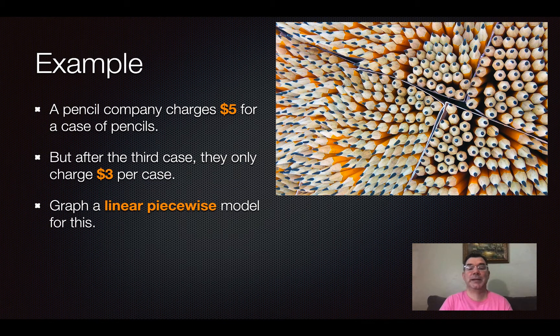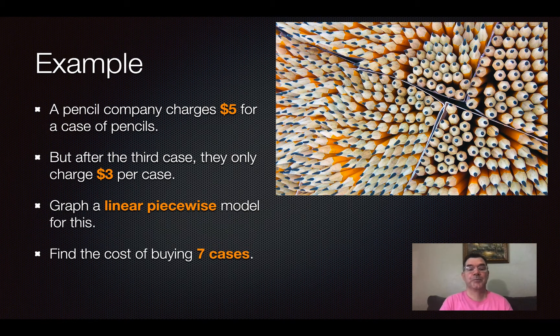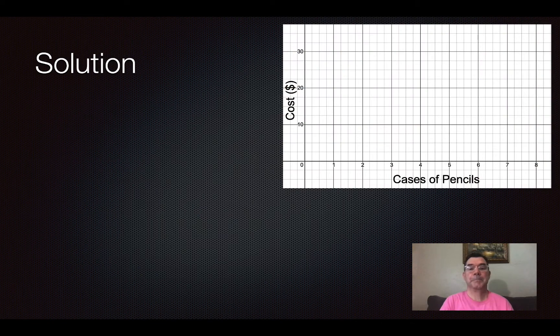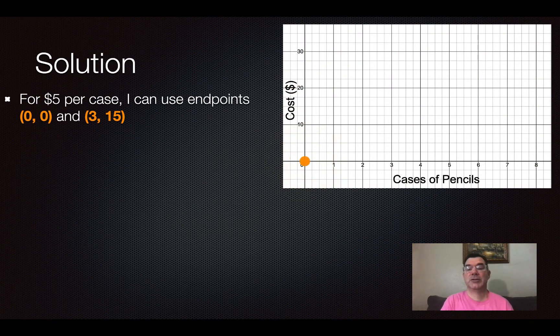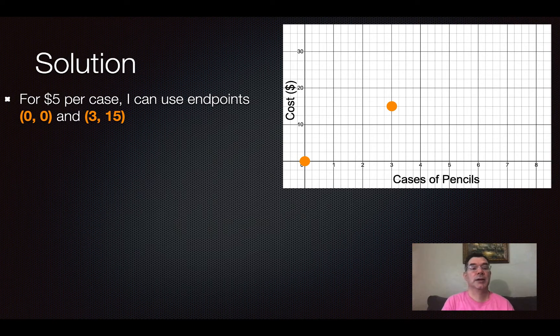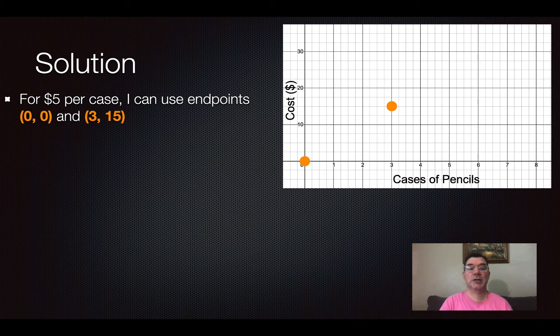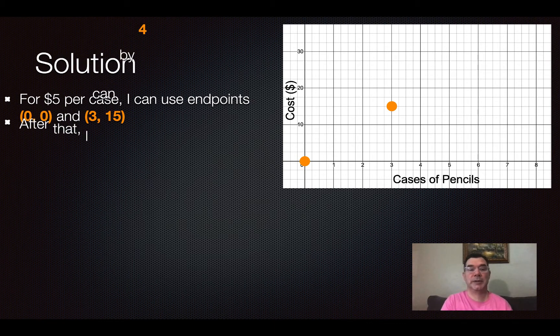We're going to graph a linear piecewise model for this and we're going to find the cost of buying 7 cases. So there's my graph. Cases of pencils is along the bottom and the cost in dollars is on the y-axis. For $5 per case, I can use the endpoints of (0, 0) meaning if I buy 0 cases I spend 0 dollars and (3, 15) meaning that if I buy 3 cases that's going to cost me $15.